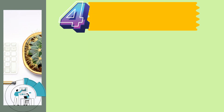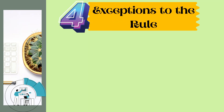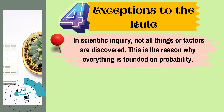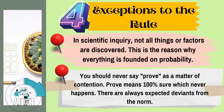The fourth part in our discussion is exceptions to the rule. In scientific inquiry, not all things or factors are discovered — there are always unknown or unaccounted areas. This is the reason why everything is founded on probability. You should never say 'prove' as a matter of contention, because 'prove' means 100% sure, which never happens. There are always expected deviants from the norm.